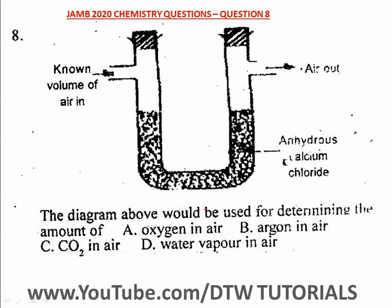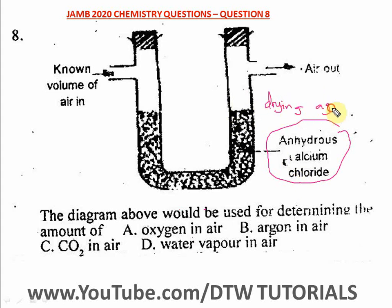Question eight: the diagram above will be used for determining the amount of words — what would this diagram be used to determine? If you see the diagram above, you would see that there is anhydrous calcium chloride, air in, and air out. Now, this anhydrous calcium chloride is a drying agent, so it is hygroscopic — it is used to draw in water molecules.